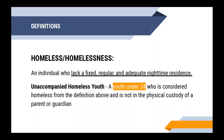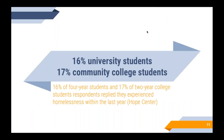We also have the definition of an unaccompanied homeless youth — someone under the age of 24 who fits that definition but is not in the physical custody of a parent or guardian. This year the Hope Center released a report finding approximately 16% of university students and 17% of two-year respondents reported being homeless within the last year. The California community college system reported about 19% homelessness, and some institutions have created their own basic needs assessments to evaluate their campus populations.